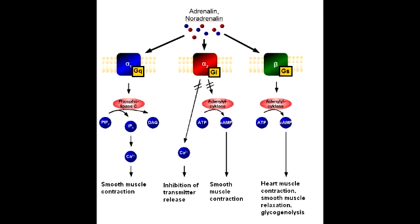Name all the sympathetic G-protein linked receptors that act through a second messenger. The sympathetic G-protein linked receptors that act through second messengers include alpha-1, alpha-2, beta-1, and beta-2 receptors.